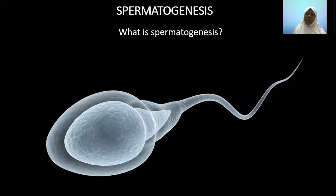In this class, we are going to discuss about what is spermatogenesis. The name itself tells us about what it is. 'Spermato' refers to spermatozoa or mature sperms, and 'genesis' refers to formation — that is, formation of sperms. So spermatogenesis is the formation of mature spermatozoa or sperms. This occurs in the male reproductive organ.